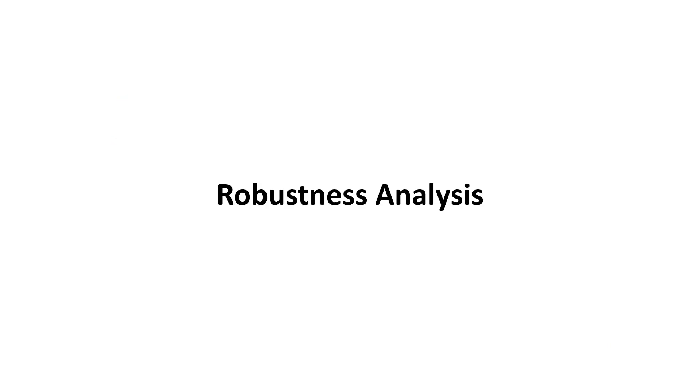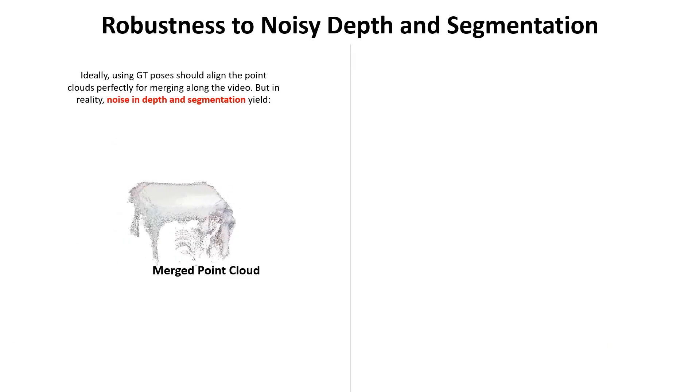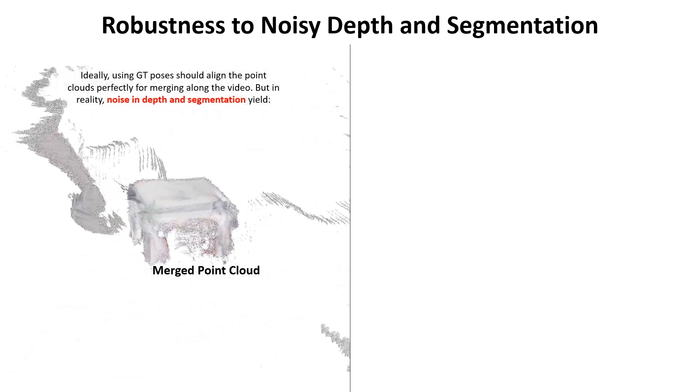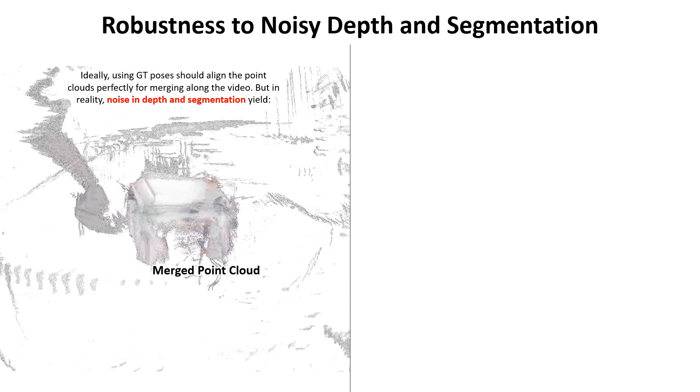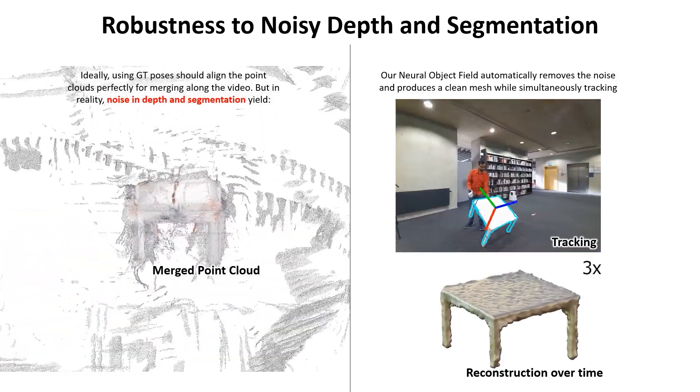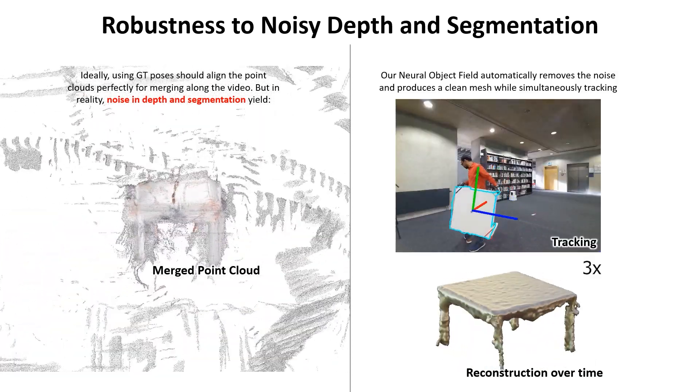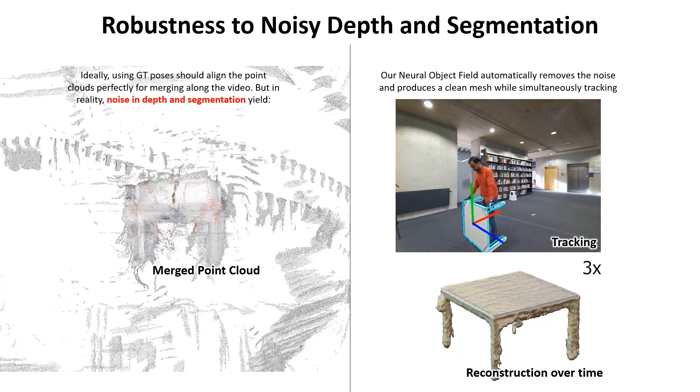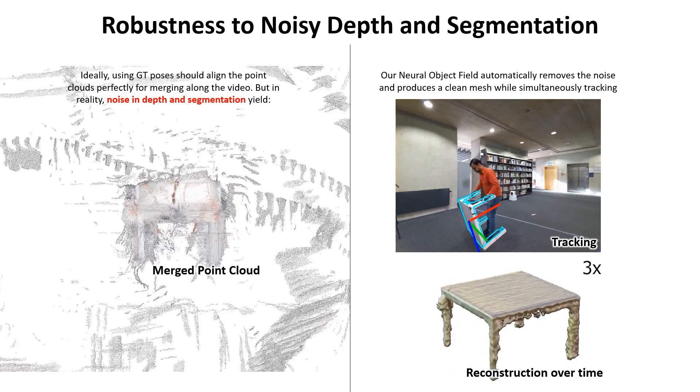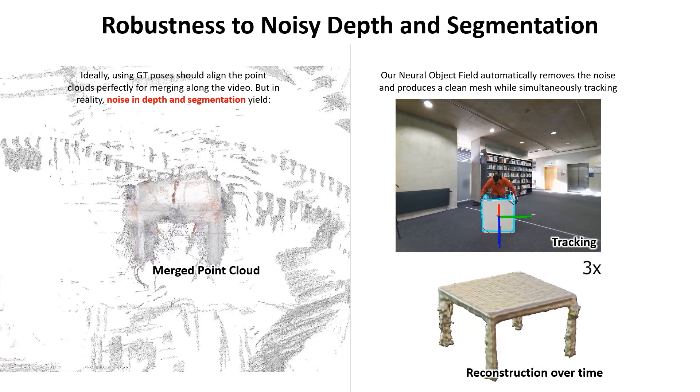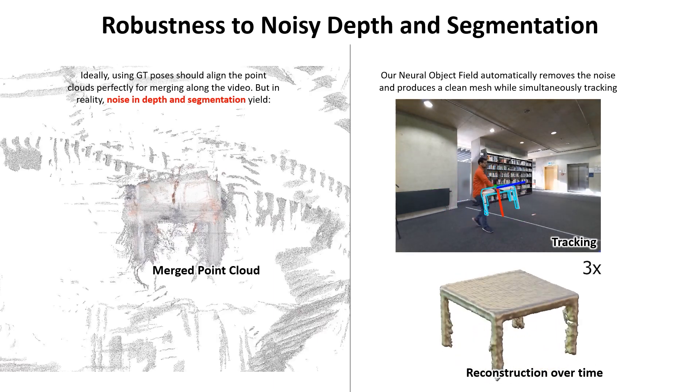Next, we show how BundleSDF is robust to noisy depth and segmentation. On the left, the merged point cloud is of poor quality even when using ground truth poses to align the point cloud. This is due to the noisy depth at far distance. The object segmentation is also imperfect, introducing many background points. On the right, we show the pose tracking and the 3D reconstruction by BundleSDF. Despite this noisy information, not only is the tracking reliable, but also the neural reconstruction automatically learns a smooth and clean mesh.